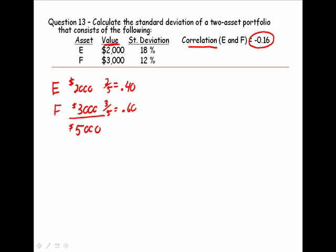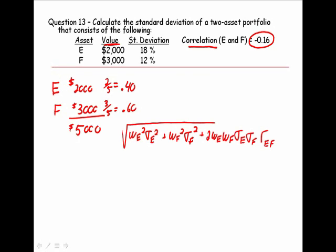Let's plug it into our formula. w_E squared times the standard deviation of E squared, plus w_F squared times the standard deviation of F squared, plus 2 times w_E, w_F, the standard deviation of E, the standard deviation of F, times the correlation between E and F, and we'll take that square root.